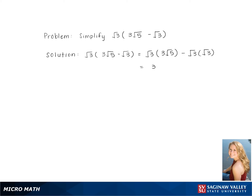This gives us 3 square root 3 times 5 minus the square root of 3 times 3. Simplifying the first term gives us 3 square root 15, and because there are two 3's, we pull out the 3. There is no radical anymore, so our final answer is 3 square root 15 minus 3.